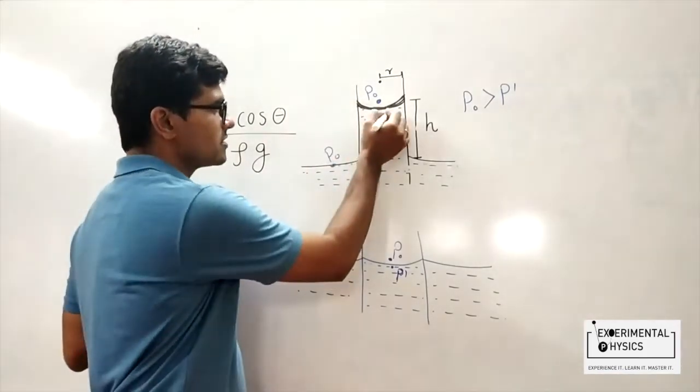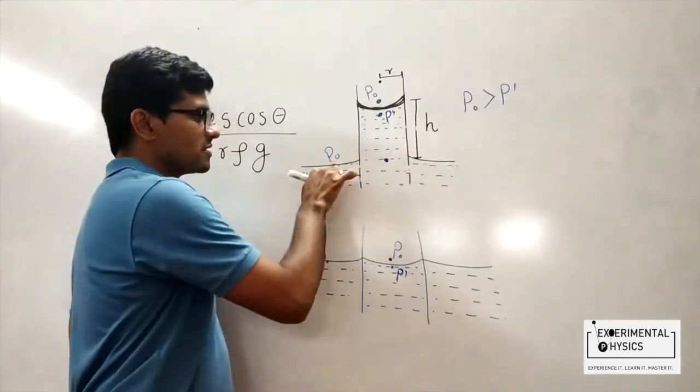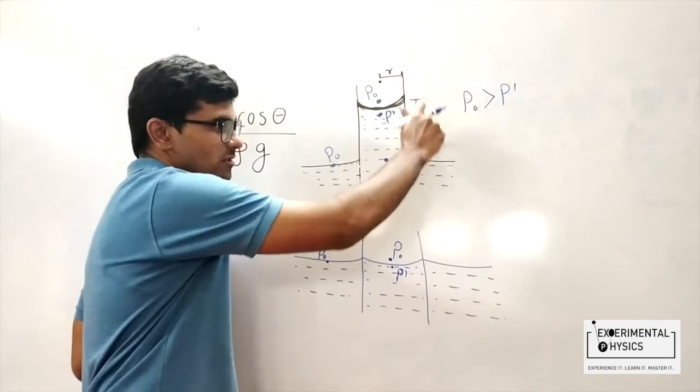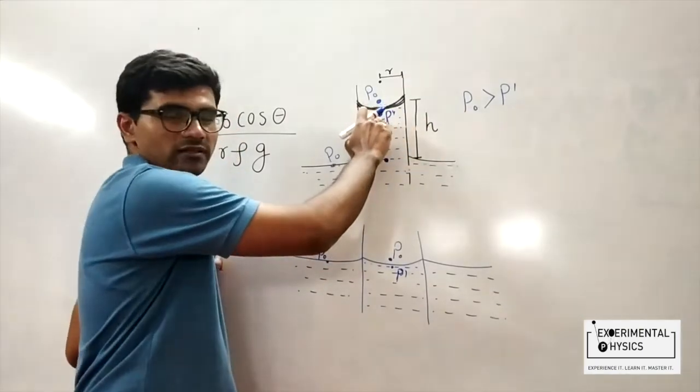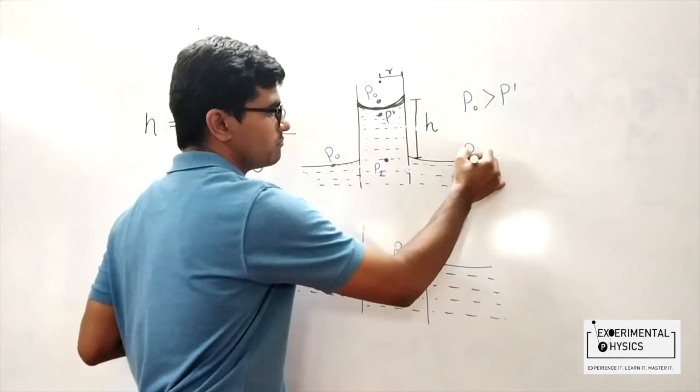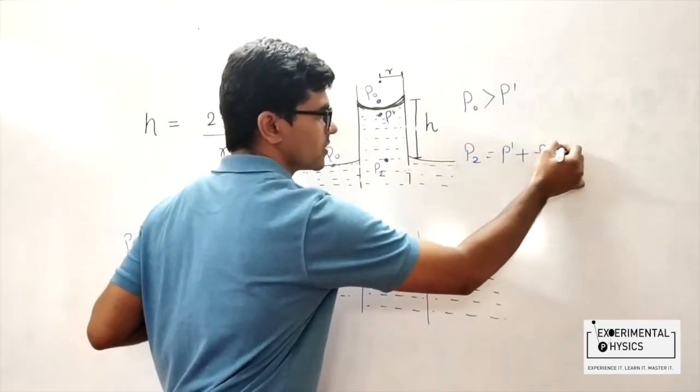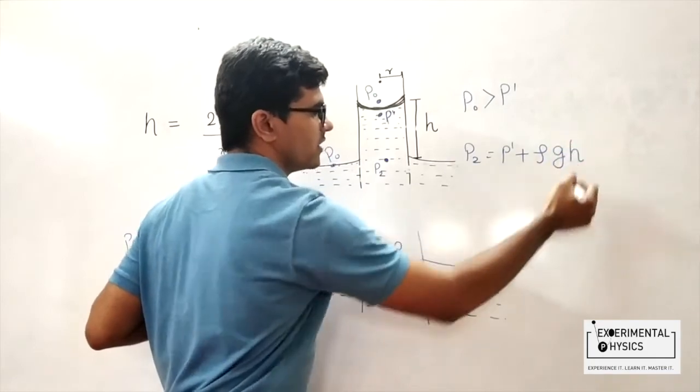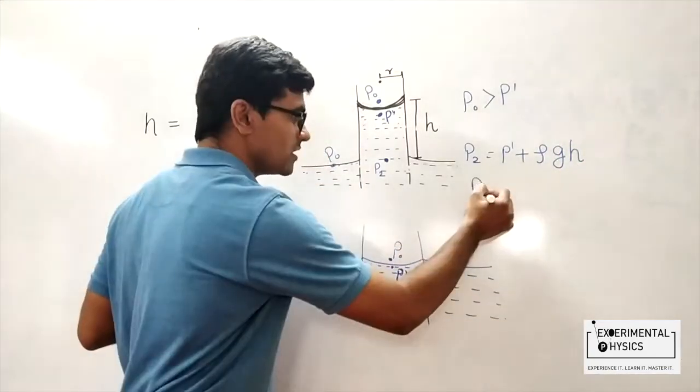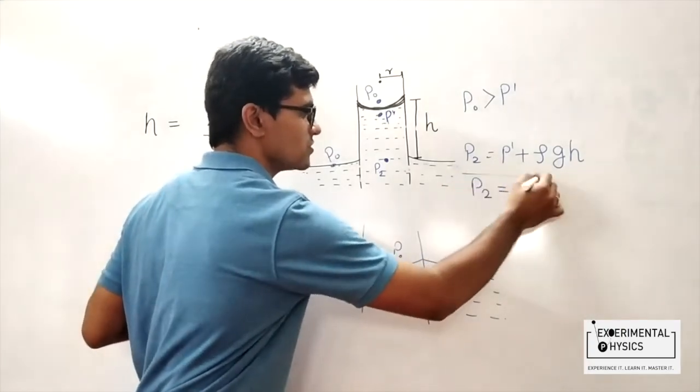Now this is the pressure p', but this point, which is at the same level as the outside, is at height h below this point. So if this is point p₂, I can write p₂ is equal to p' plus density of water into acceleration due to gravity into h, the hydrostatic pressure formula. p₂ is equal to p₀, and this should happen.